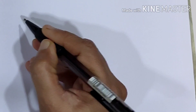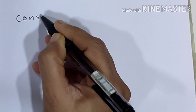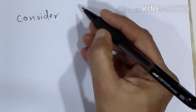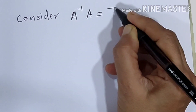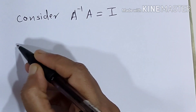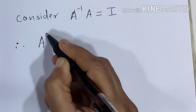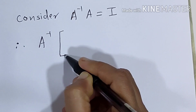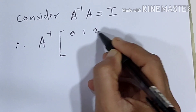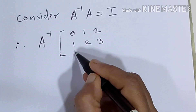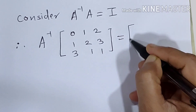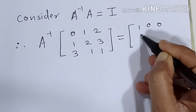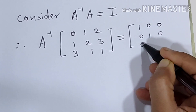For column transformation, how do we start? We consider A inverse into A is equal to I. Therefore A inverse into the given matrix — 0 1 2 / 1 2 3 / 3 1 1 — is equal to the identity matrix 1 0 0 / 0 1 0 / 0 0 1.